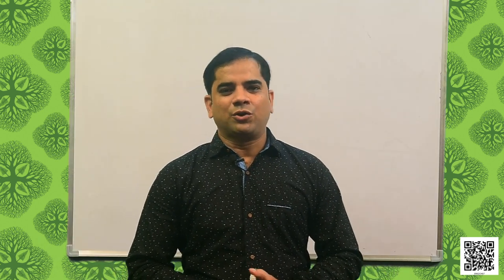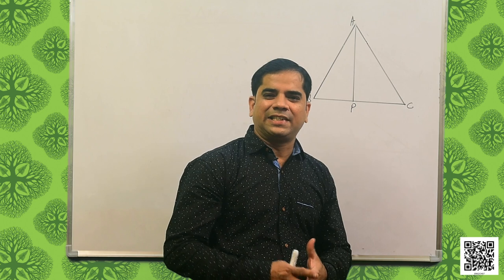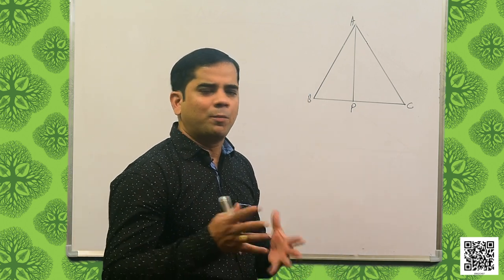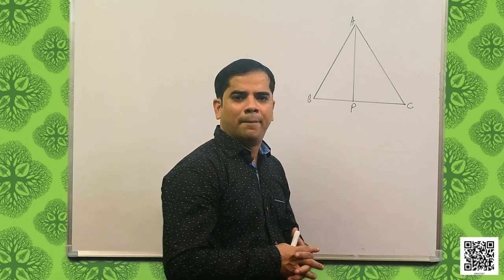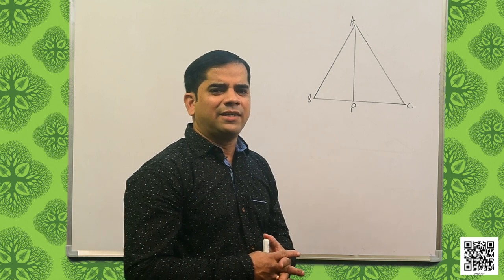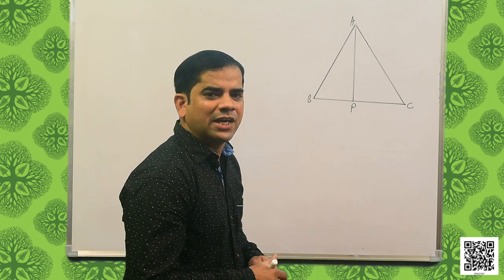Let us now discuss question number 5. It says ABC is an isosceles triangle with AB equal to AC. Draw AP perpendicular to BC to show that angle B is equal to angle C. I have drawn the diagram as given in your book. Consider triangle APB and triangle APC.